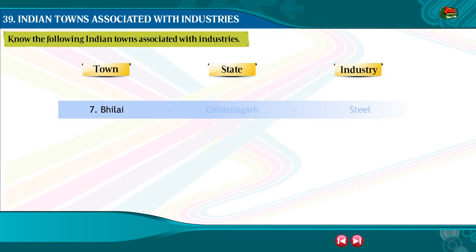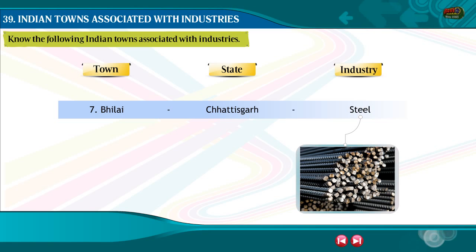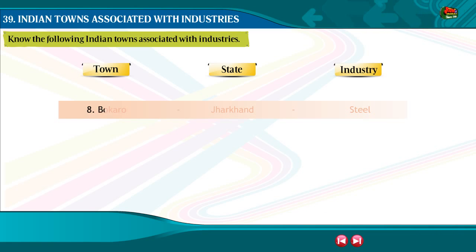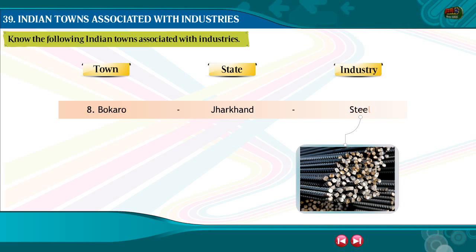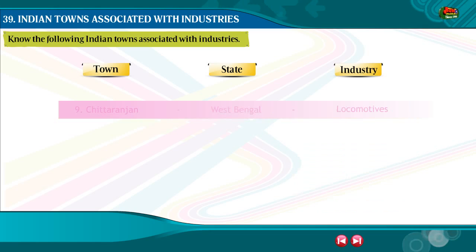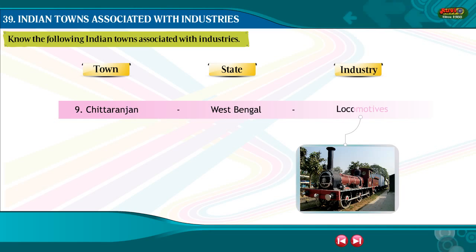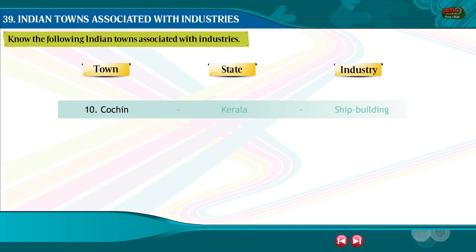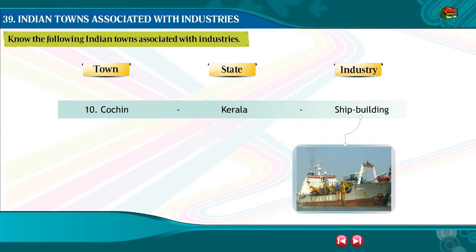7. Bhilai, Chhattisgarh — Steel. 8. Bokaro, Jharkhand — Steel. 9. Chittaranjan, West Bengal — Locomotives. 10. Cochin, Kerala — Ship Building.